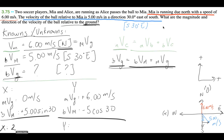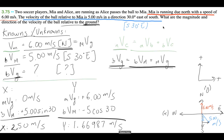Summing the components: x = 0 + 5.00 sin 30° = 2.50 m/s (east). y = 6.00 − 5.00 cos 30° = 1.66987 m/s (north, carrying extra decimal places to minimize rounding error). Now to find the magnitude we apply the Pythagorean theorem to these x and y components.